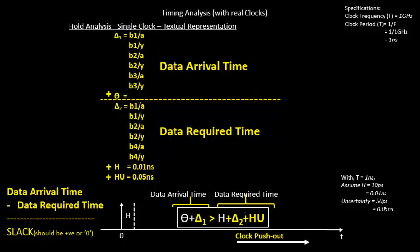Clock push-out increases the capture clock network delay, which increases the data required time. If the data required time increases, the slack becomes more negative. This stresses our limits for a more exhaustive hold check.